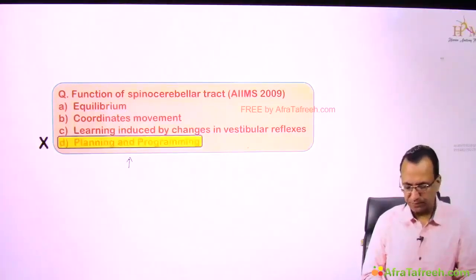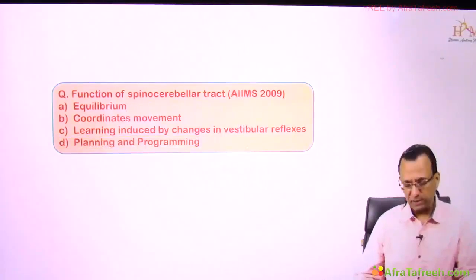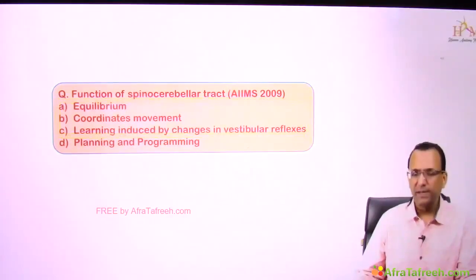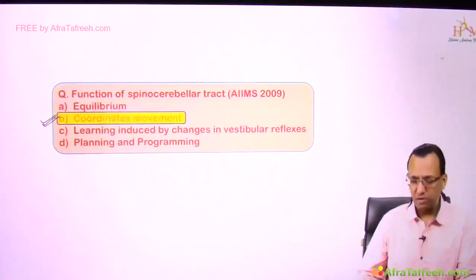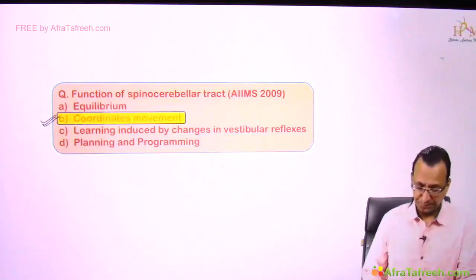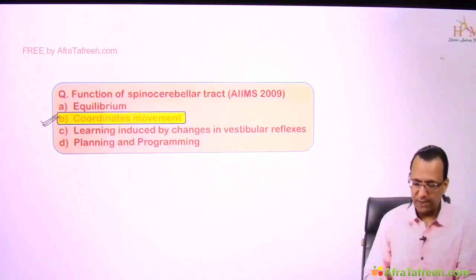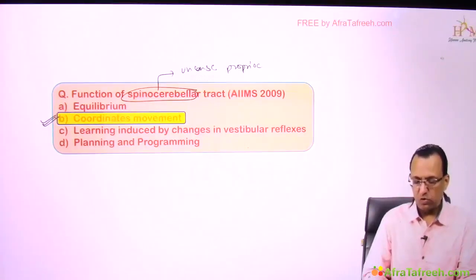Planning and programming of voluntary motor activity is the job of basal ganglia, so that cannot be the answer here. According to Gray's Anatomy, the answer is coordination of voluntary motor activity — for example, walking in a straight line. The Spinocerebellar tract carries unconscious proprioception towards the brain.